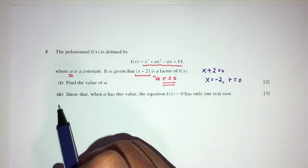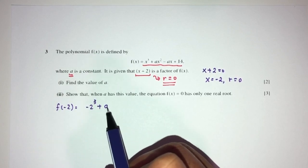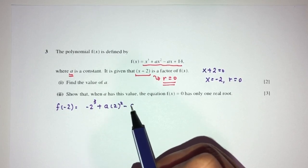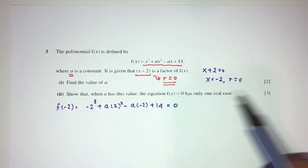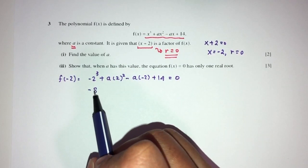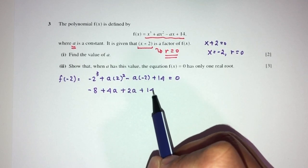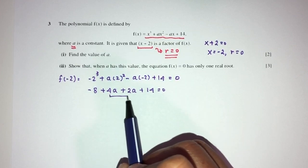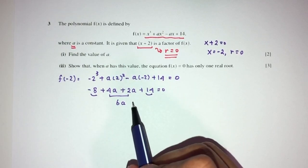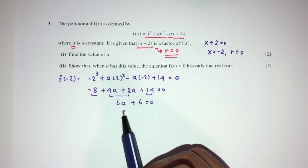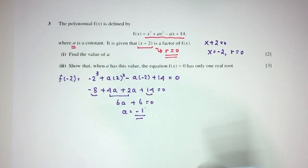So we replace here: f of minus 2 should be minus 2 cubed plus a times minus 2 squared minus a times minus 2 plus 14, and they have to give you 0. Simplify: minus 8 plus 4a plus 2a plus 14 equals 0. This will be 6a. Minus 8 plus 6 equals 0. a will be minus 1. This is your answer for part 1 for the value of a.